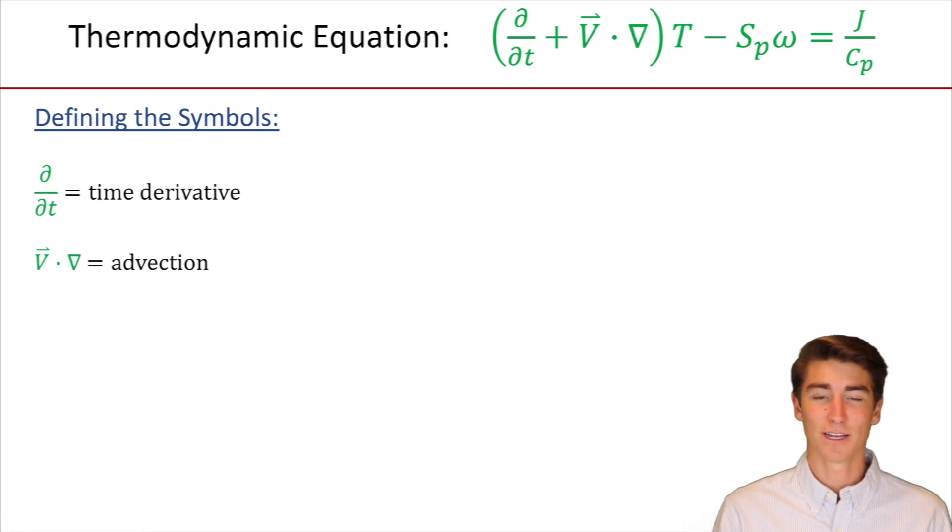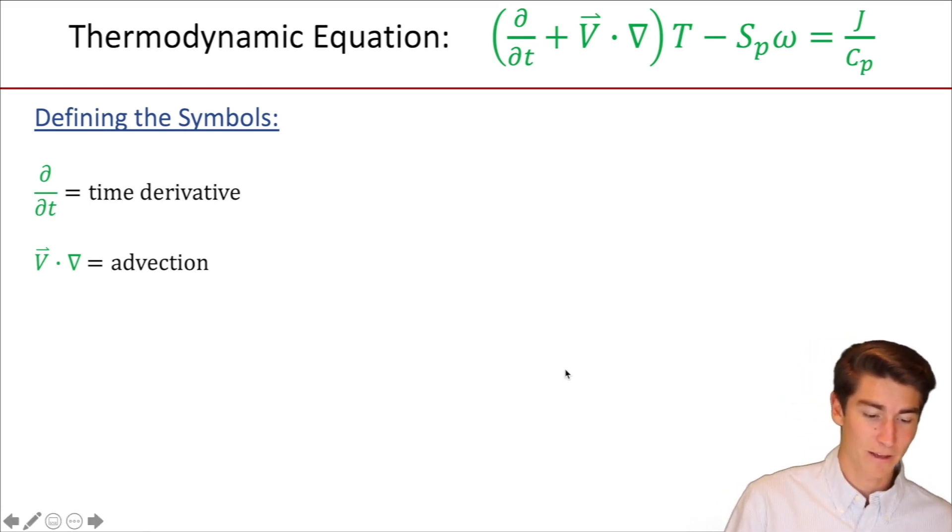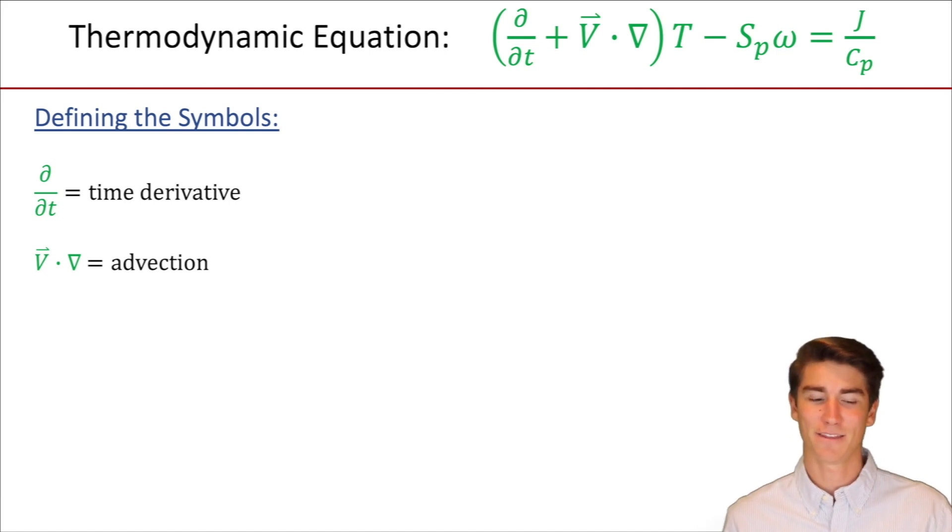V·∇ equals advection. So that V will expand into your horizontal wind components. Your u, which is wind from like San Francisco to New York, and then v which would be like San Francisco to Canada wind. And then the del would be how those are changing on the x-axis and the y-axis.